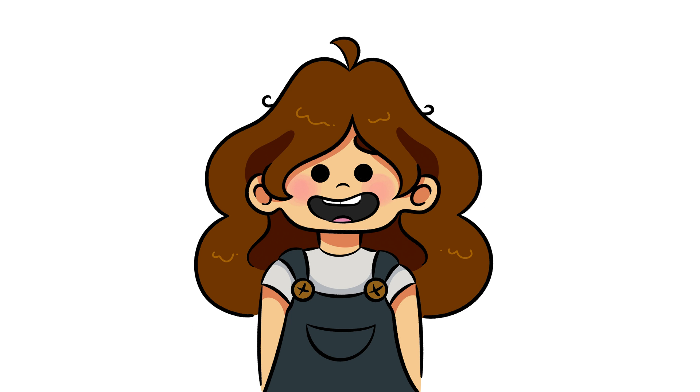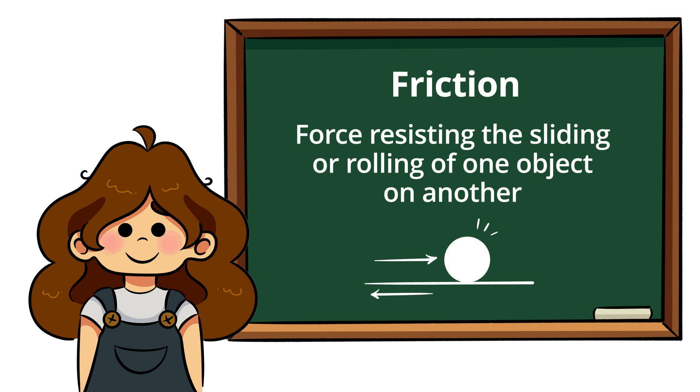Now that we're energy experts, let's switch over to another science concept behind roller coaster movement: friction. Friction is the force resisting the sliding or rolling of one object on another. The more resistance, the more friction, and vice versa.